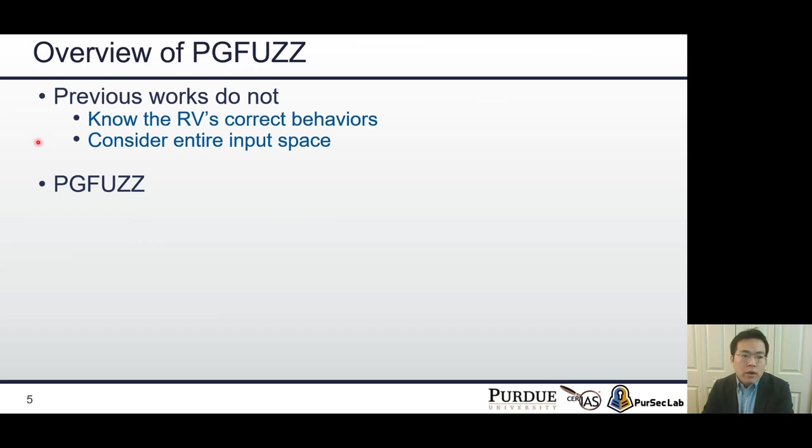To summarize the problems of previous works: first, they could not detect the bugs because they do not know the RVs correct behaviors. Second, it is highly unlikely to trigger the bugs because previous works do not consider the entire input space. To tackle these problems, we suggest a new fuzzer. The name is PGFUZZ.